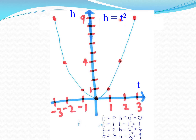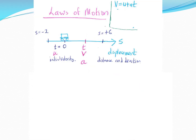We're interested in the coefficient — the sign in front of the t squared. If that's positive, it's usually a U-shaped graph. But if that's negative — if it's minus t squared — it would be upside down, just like we saw on the bridge a moment ago.